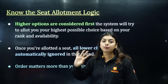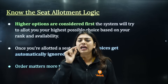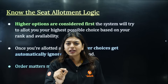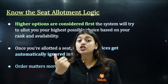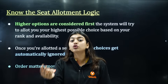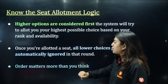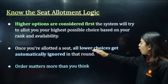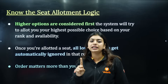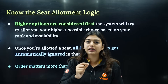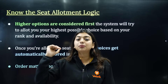What is the most important thing? Know your seat allotment logic. Higher options you give means the system is automatically going to try and fit you into the highest possibility rank. Once you're allotted a seat, all lower choices will get automatically ignored. So always start with higher options.